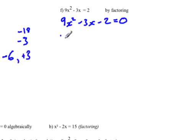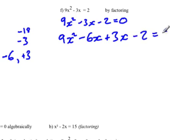So what we're going to do is decompose this middle term, and so we're going to write this as 9x² - 6x + 3x - 2 = 0. So we'll put brackets around the first two terms and the last two terms.